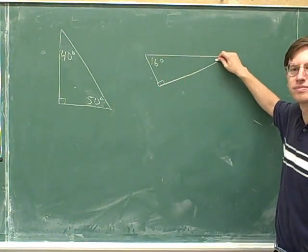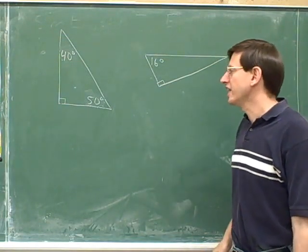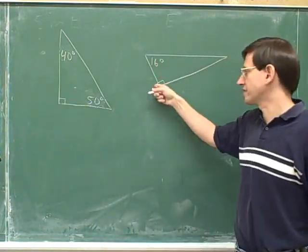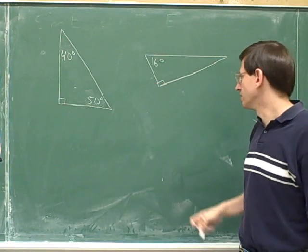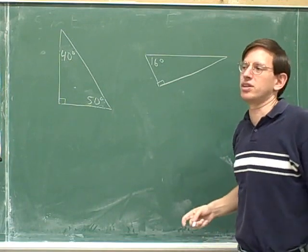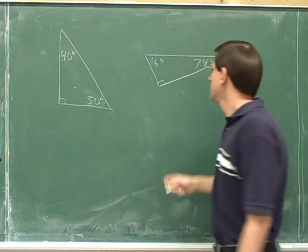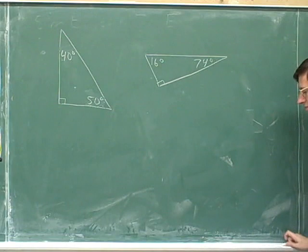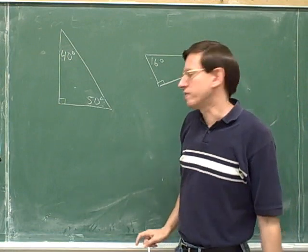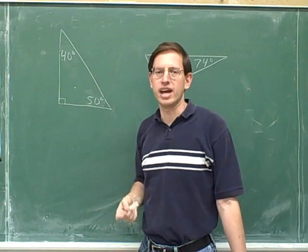How big is this angle? Here we have another right triangle. It doesn't look as normal as the previous one, but it's still a right triangle because it has the little box showing the 90 degree angle. So this angle plus this angle must be 90, meaning this angle must be 90 minus 16, which gives you 74. We've seen that if you ignore the right angle, the remaining two angles always add up to 90 degrees.